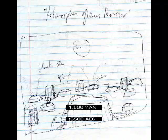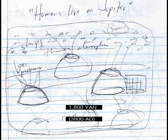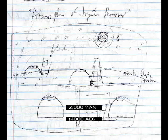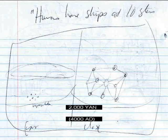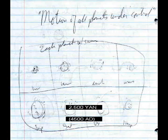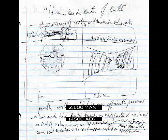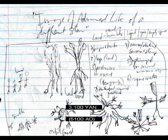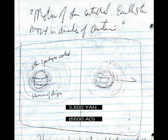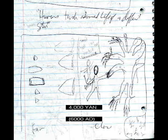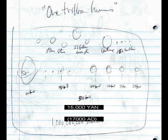Atmosphere of Venus removed. Humans live on Jupiter. Atmosphere of Jupiter removed. Humans have ships at ten stars. Motion of all planets under control. Humans reach the center of the Earth. Image of advanced life of a different star. Motion of star controlled. Star of Earth moved in direction of Centauri. Humans touch advanced life of a different star. One trillion humans.